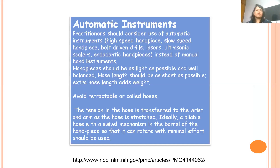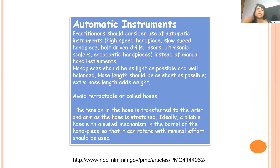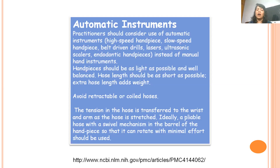For automatic instruments — endomotors, high-speed handpieces, lasers, ultrasonics — they should be as light as possible and well-balanced. The hose length, that is your terminal, should be as short as possible; when longer, it pulls the operator's hand away from the patient and adds resistance on the wrist. Avoid retractable coiled hoses — they put tremendous pressure on the wrist, as the tension in the hose is transferred to the wrist and arm. Ideally, use a pliable hose with a swivel mechanism in the barrel of the handpiece so that it can rotate with minimal effort.